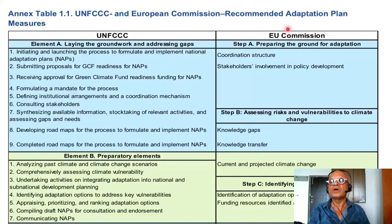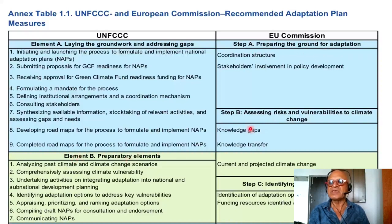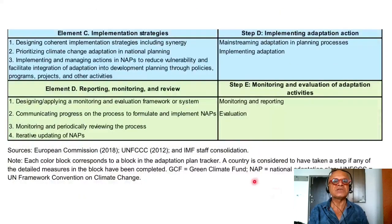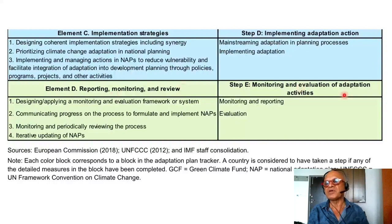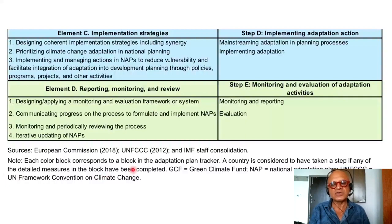The EU Commission step of preparing the ground for adaptation corresponds to Element B — preparatory elements — which includes assessing risks and vulnerabilities to climate change. Element C is identifying adaptation options, while the implementation strategies cover implementing adaptation action, reporting, monitoring and review, and monitoring and evaluation of adaptation activities. Each color block here corresponds to a block in the adaptation plan tracker.